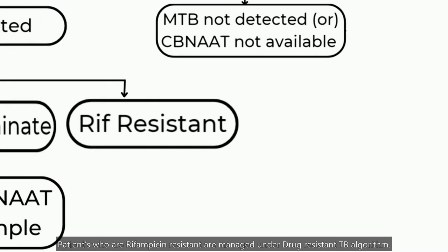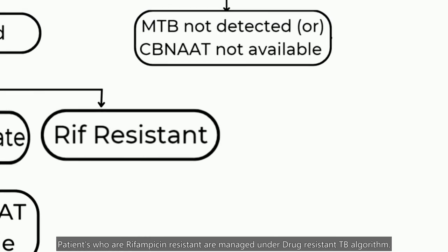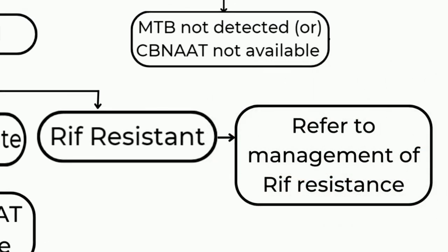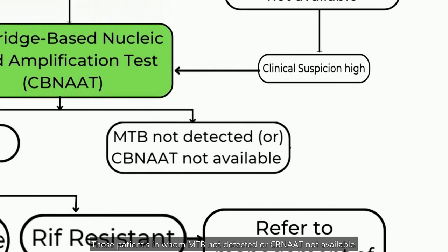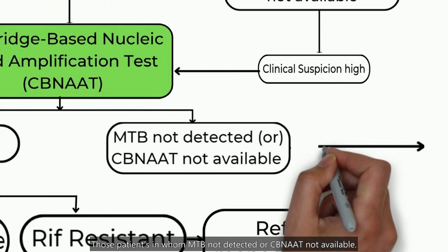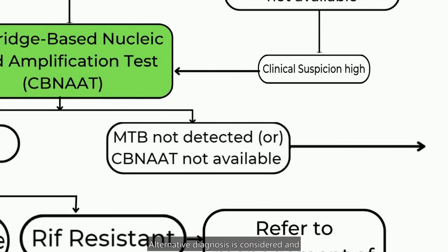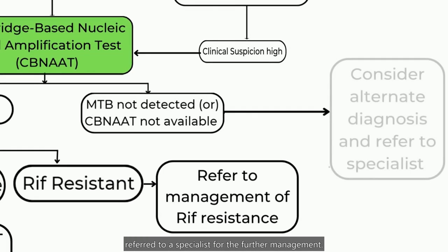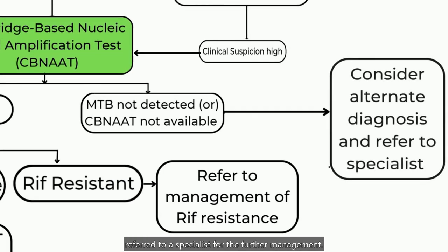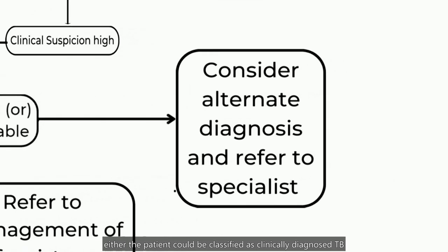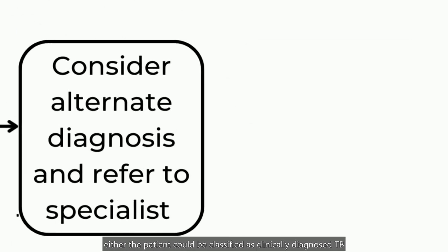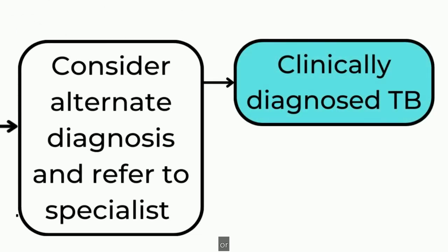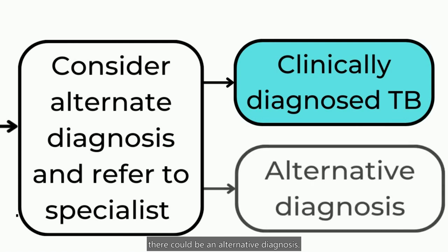Patients who are rifampicin-resistant are managed under the drug-resistant TB algorithm. Those patients in whom MTB is not detected or CBNAAT is not available, an alternative diagnosis is considered and they are referred to a specialist for further management, following which the patient could be classified as clinically diagnosed TB or there could be an alternative diagnosis.